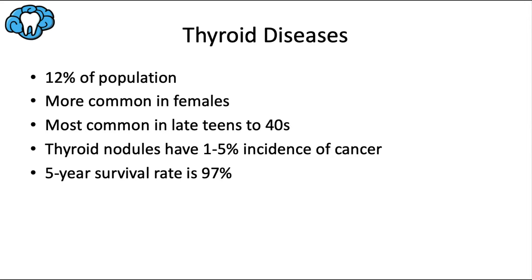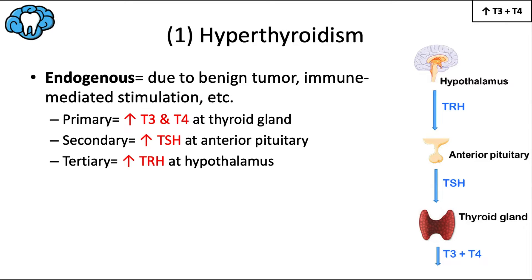Some epidemiologic data: 12% of the U.S. population will develop a thyroid disorder during their lifetime — this could be hyperthyroid, hypothyroid, or thyroid cancer. They're generally more common in females and usually affect people from the late teens to their 40s, though it can occur in older adults. Thyroid nodules can be found in about 5% of the adult population with a 1–5% chance of containing cancer, but prognosis is quite good at 97% five-year survival.